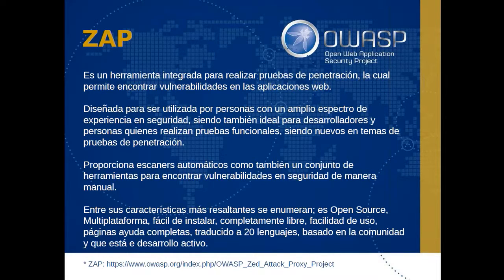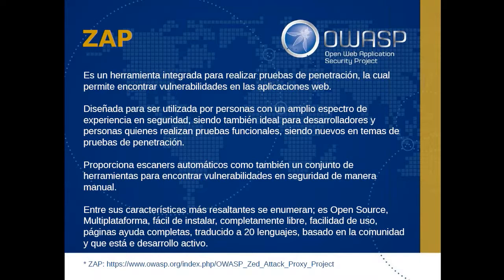Entre las características más resaltantes de ZAP se enumeran: ser open source o de fuente abierta, multiplataforma — pueden utilizarlo en Linux, en Windows —, es fácil de instalar, completamente libre, tiene facilidad de uso una vez entendido su funcionamiento, relativamente sencilla. Contiene en el sitio web del proyecto páginas de ayuda bastante completas y está traducido a más de 20 lenguajes. Dado el hecho de que se trata de un proyecto comunitario, está en constante desarrollo y muy activo.